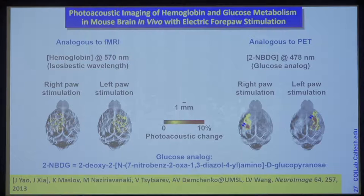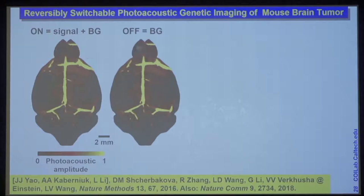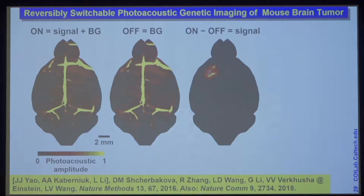We can also use genetic encoding to image all sorts of proteins. An example uses reversibly switchable proteins — you can turn the absorption on and off using light. When protein absorption is on, we see the protein signal plus background; when switched off, only the background shows. Subtracting the two reveals the protein signal, since that's the only thing that changed and the background is removed. That gives you a genetically specific contrast mechanism for many different studies.